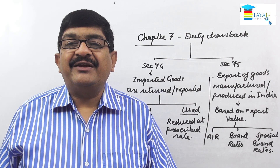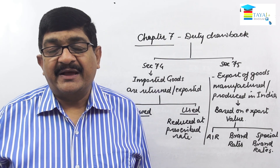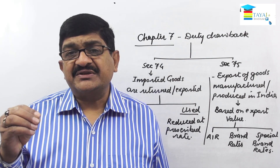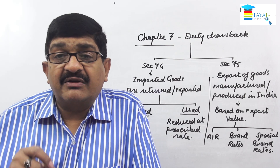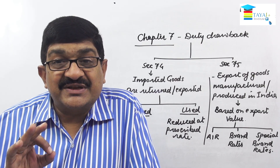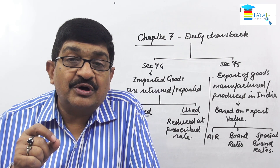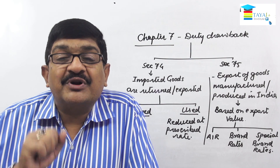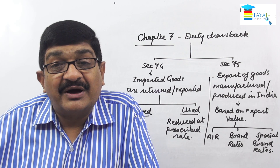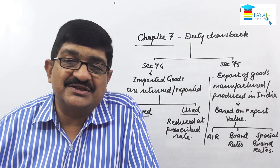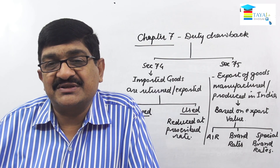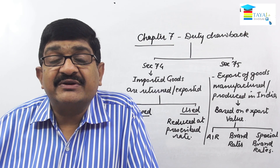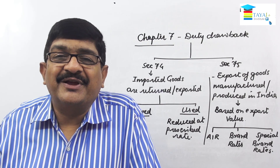Chapter eight is a comparatively small chapter about refunds. Refunds are covered mainly under section 26A and section 27. Under section 26A, the refund is given under a very specific situation: if imported goods are not as per the order, do not meet specification requirements, or are not suitable for use, and the goods are returned or exported within 30 days, then 100% refund is available. This is called a refund, not a duty drawback, since duty drawback falls under sections 74 to 77.